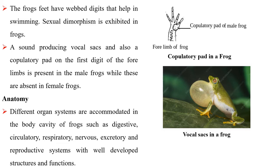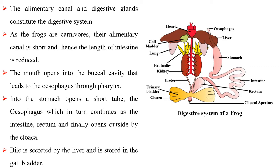The alimentary canal and digestive glands constitute the digestive system. As the frogs are carnivores, their alimentary canal is short and hence the length of intestine is reduced. The mouth opens into the buccal cavity that leads to the esophagus through the pharynx. The esophagus is a short tube that opens into the stomach, which in turn continues as the intestine, rectum and finally opens outside by the cloaca.